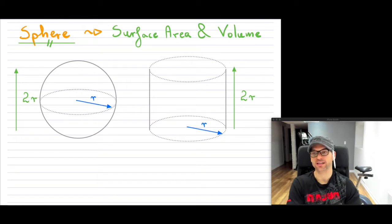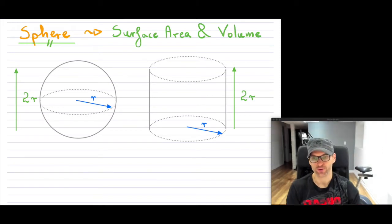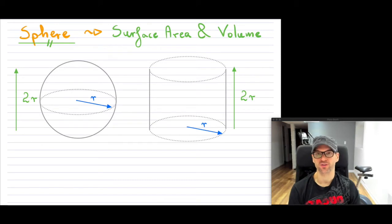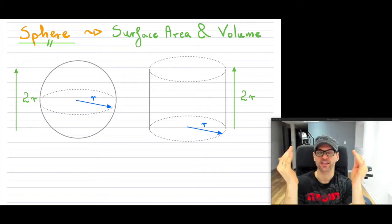So if they have the same radius and the same height, in this case the height is 2r because that's the diameter of the sphere. When those two are equivalent, it turns out that Archimedes has shown that the surface area of the sphere is identical to the lateral part of the cylinder.